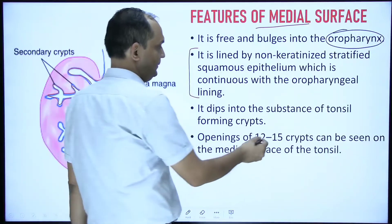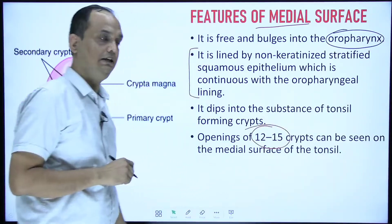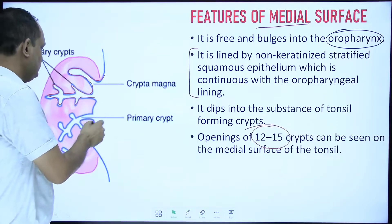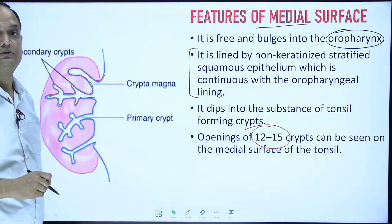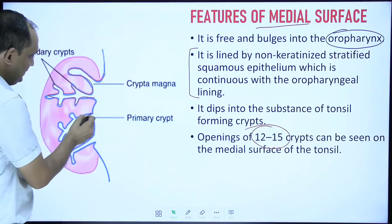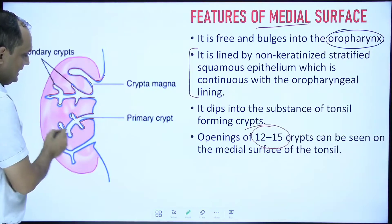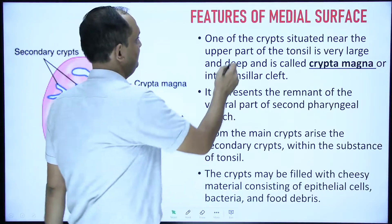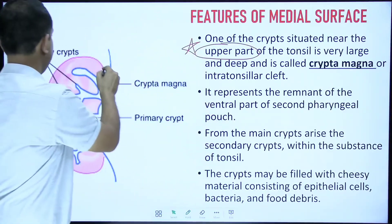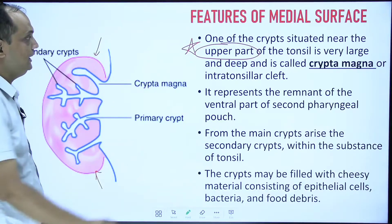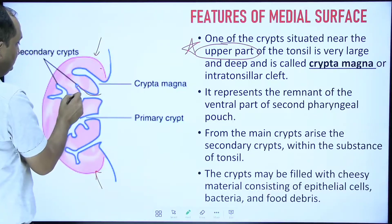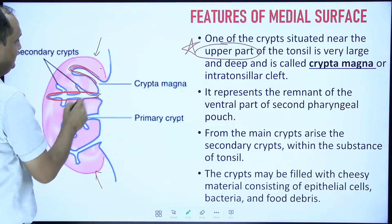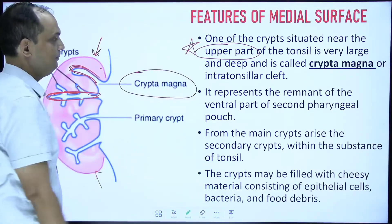There are around 12 to 15 crypts, with their openings seen on the medial surface. These crypts show branching: the major crypt is the primary crypt, and its branches are secondary crypts. One crypt situated near the upper pole becomes large — this largest crypt near the upper pole is known as the crypta magna.